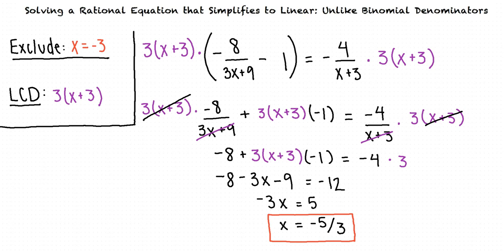So to solve a rational equation with unlike binomial denominators, we first need to exclude all values of x that would give a denominator of 0. Next, we find the least common denominator of all the fractions, and we use this to multiply both sides of the equation in order to clear the fractions. We then simplify it to determine our final answer. That's exactly right. Great work!